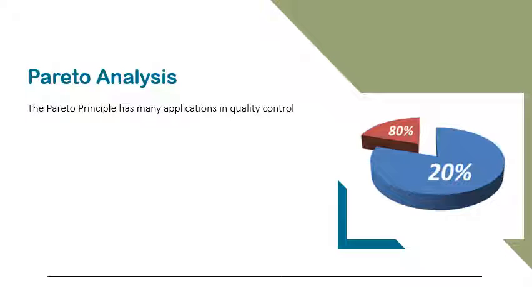In PMBOK, Pareto ordering is used to guide corrective action and to help the project team take action to fix the problems that are causing the greatest number of defects first.